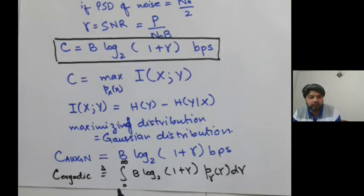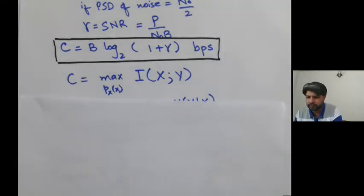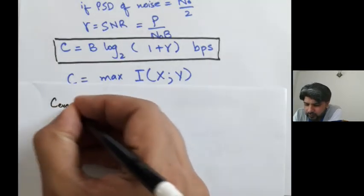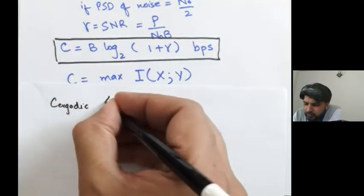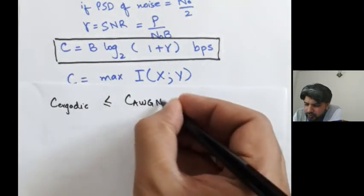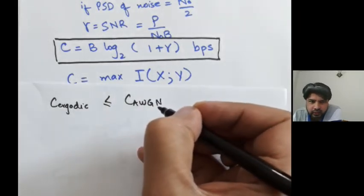C ergodic would always be less than or equals to C AWGN, and the reason is the Jensen's inequality.